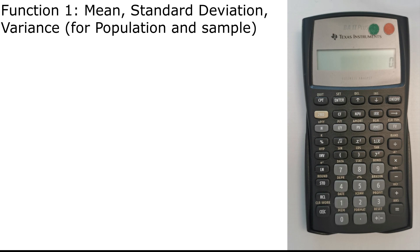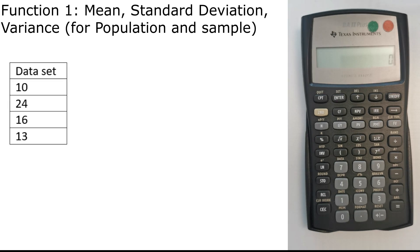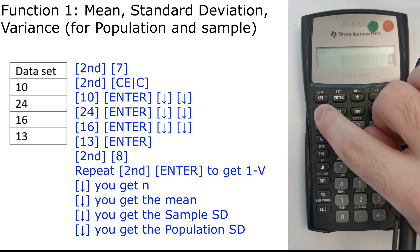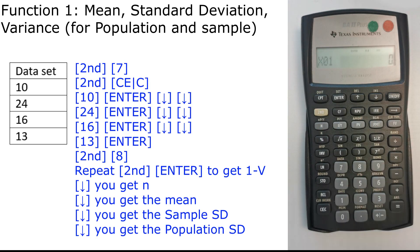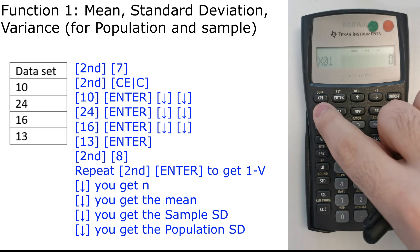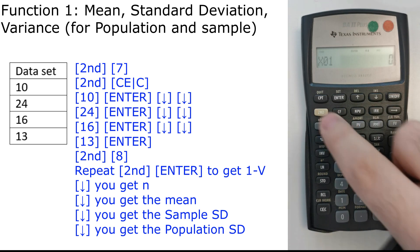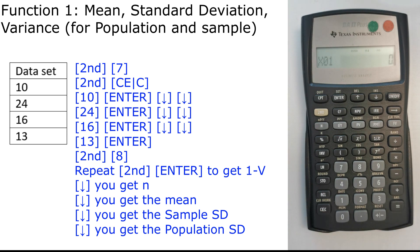The first function or tip that we're going to see today is how to calculate the mean, standard deviation, and variance of a population and a sample. Given the following data set, we will input them into the calculator. First we press 2nd, then 7 as data. We get X01. We should first clear out the calculator, so we press 2nd, then clear to clear out everything that's inputted previously.